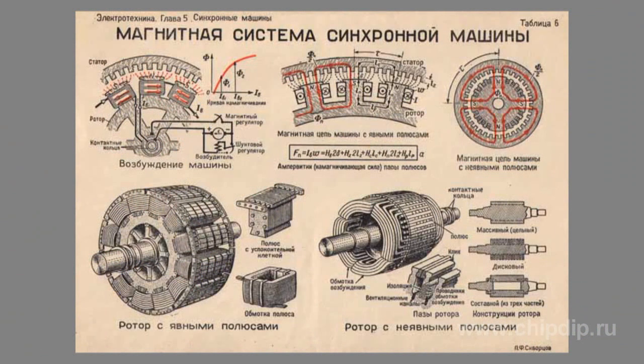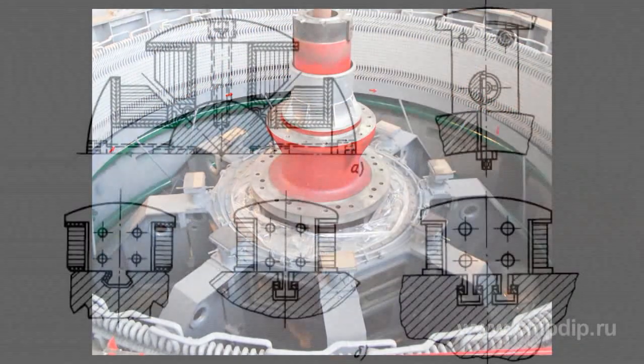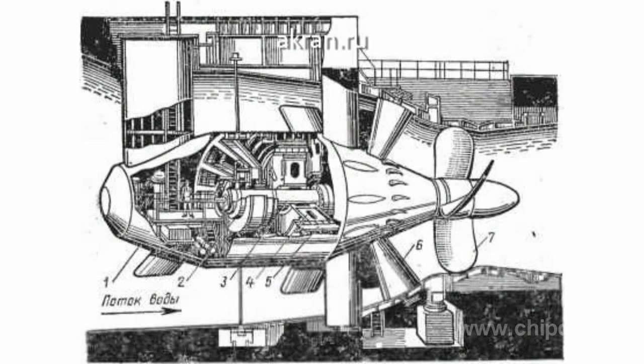The construction of a hydrogenerator is generally specified by the axle position of the rotor, rotational frequency, and turbine capacity. High-power slow hydrogenerators usually have a vertical axis of rotation, while high-speed ones are made with a horizontal axis of rotation.